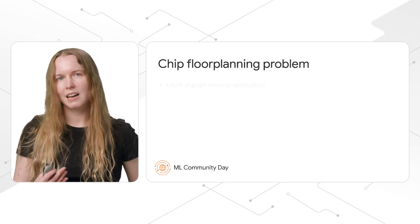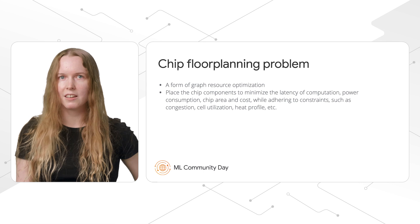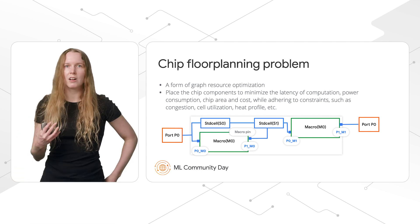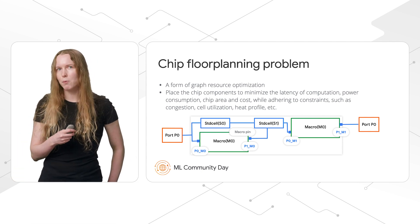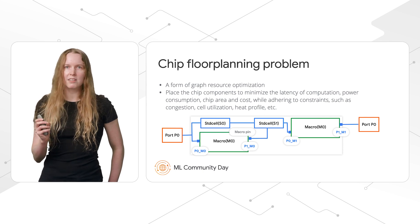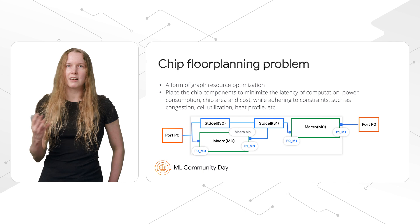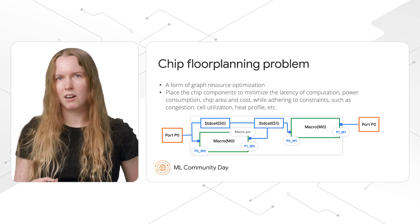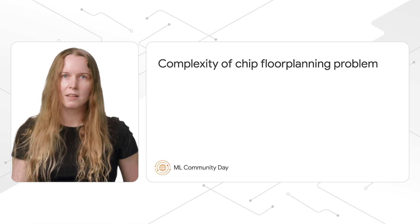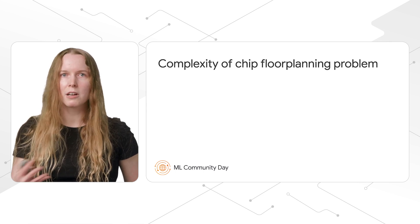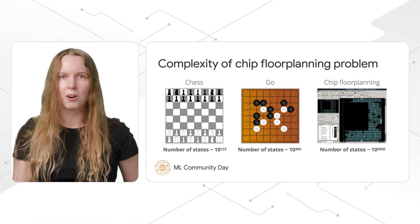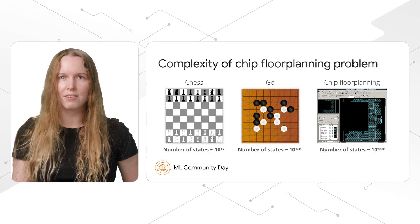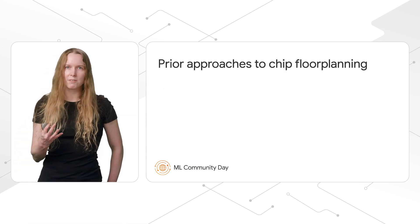So what is the chip floor planning problem? At a high level, it's a form of graph resource optimization. We take as input a graph of chip components — memory components like macros and logic gates like NAND and NOR — all connected by wires. The objective is to place this graph onto a 2D chip canvas such that we minimize various costs like latency of computation, power consumption, and area, while adhering to hard constraints like routing congestion and cell utilization. This is an extremely complex problem: a simplified version of a single instance has 10 to the 9,000 possible states, and there has been 60 years of research on this topic.